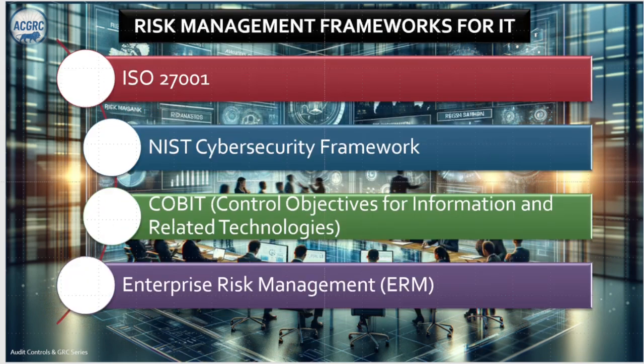There are many risk management frameworks for IT; let's look at four. ISO 27001 is a widely recognized standard for information security management systems (ISMS) that provides guidelines for risk assessment and mitigation. The NIST Cybersecurity Framework is developed by the National Institute of Standards and Technology to help organizations manage and reduce cybersecurity risk. COBIT — Control Objectives for Information and Related Technology — is a governance and risk management framework that aligns IT with business objectives and regulatory requirements. ERM, or Enterprise Risk Management, is a holistic approach to managing risk across an organization's IT operations.